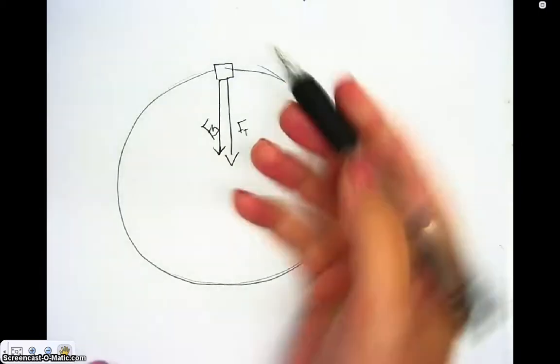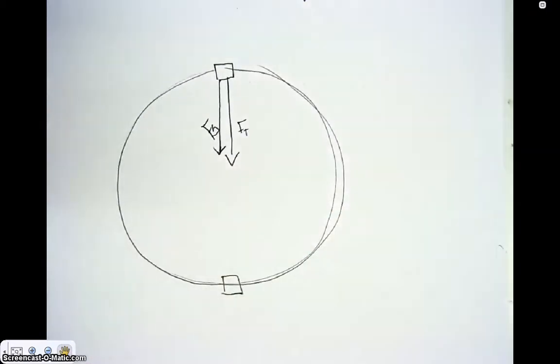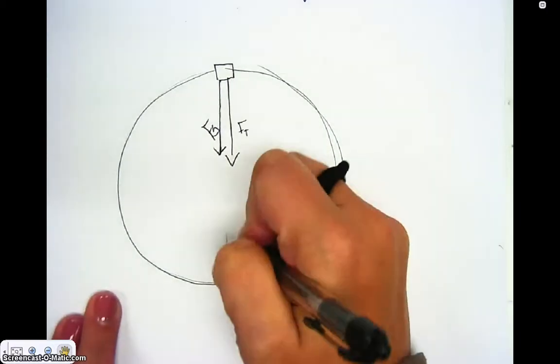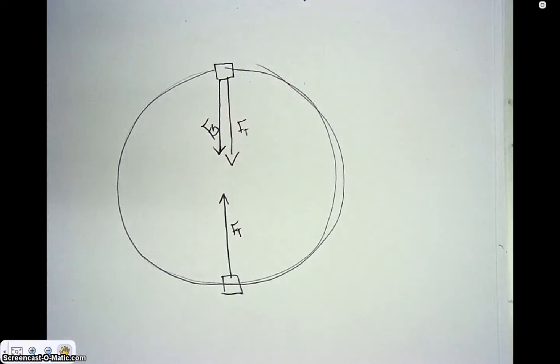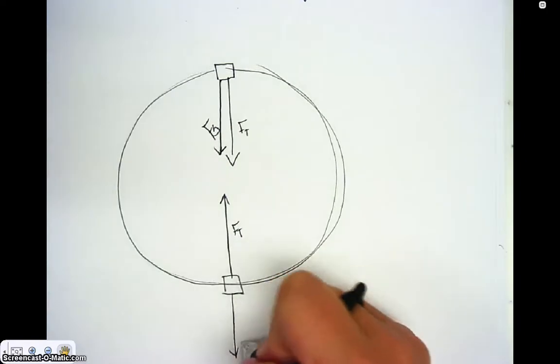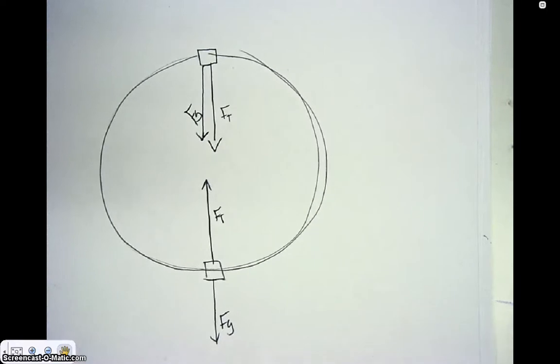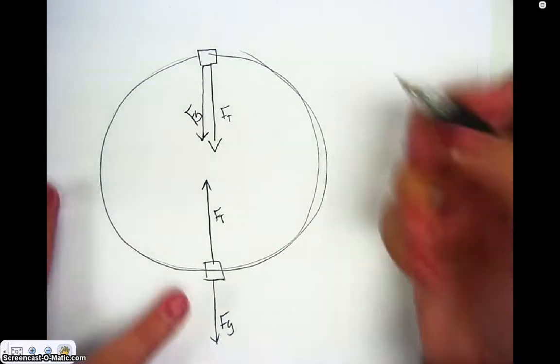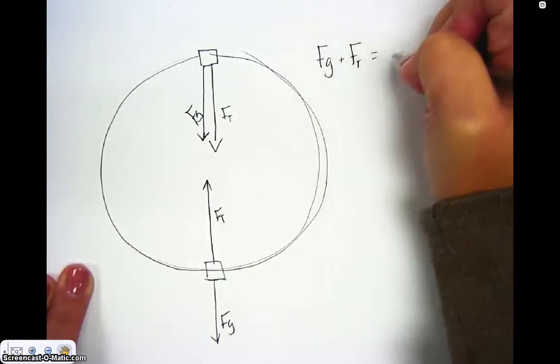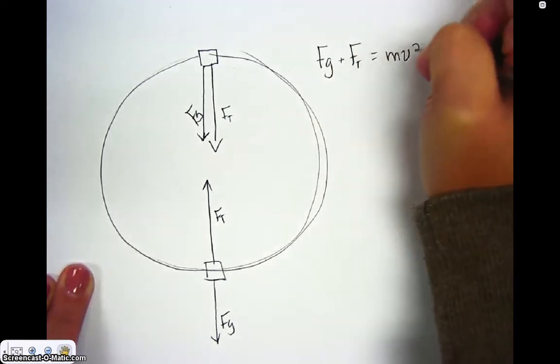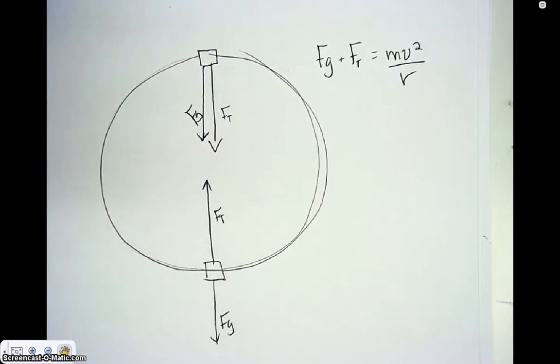If I were swinging around to the bottom, here's my stopper down here. Force due to tension is still towards the center because that's where my string is. But gravity is now opposing. So if I were to write a sum of all forces equation up here, I would have Fg plus Ft equals mv squared over r. These are the two things together that are causing the turning. Down here, I would have Ft minus Fg equals mv squared over r.